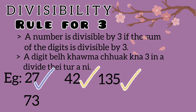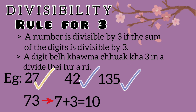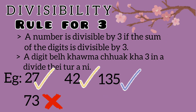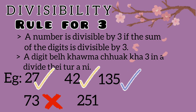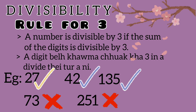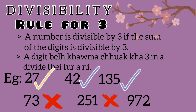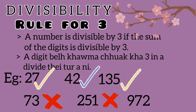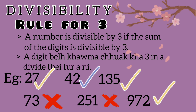Example: 73. 7 plus 3 equals 10. 10 is not divisible by 3, so 73 is not divisible by 3. Example 2: 5, 1 — 9, 7, 2 — 2, 9 — 10, 11 — the sum is 18. 18 is divisible by 3, so this number is divisible by 3.